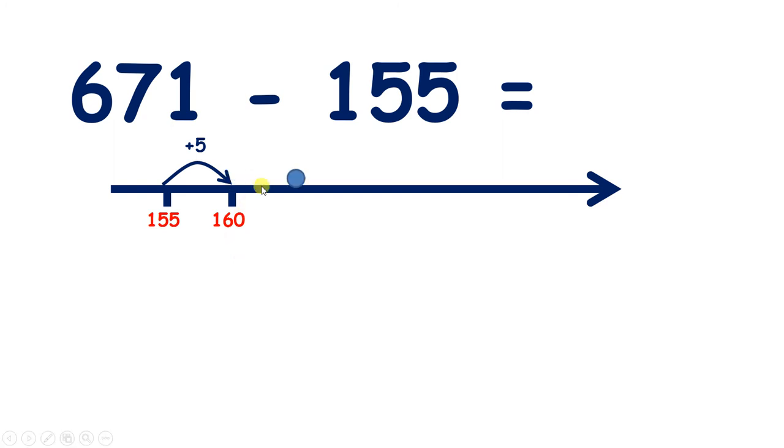Then we need to add 40 to get to 200, and we need to reach 671. So how many more 100s do we need to get to 600? We need to add 400 to reach 600, and then we can add 70, and then add 1 to make 671.